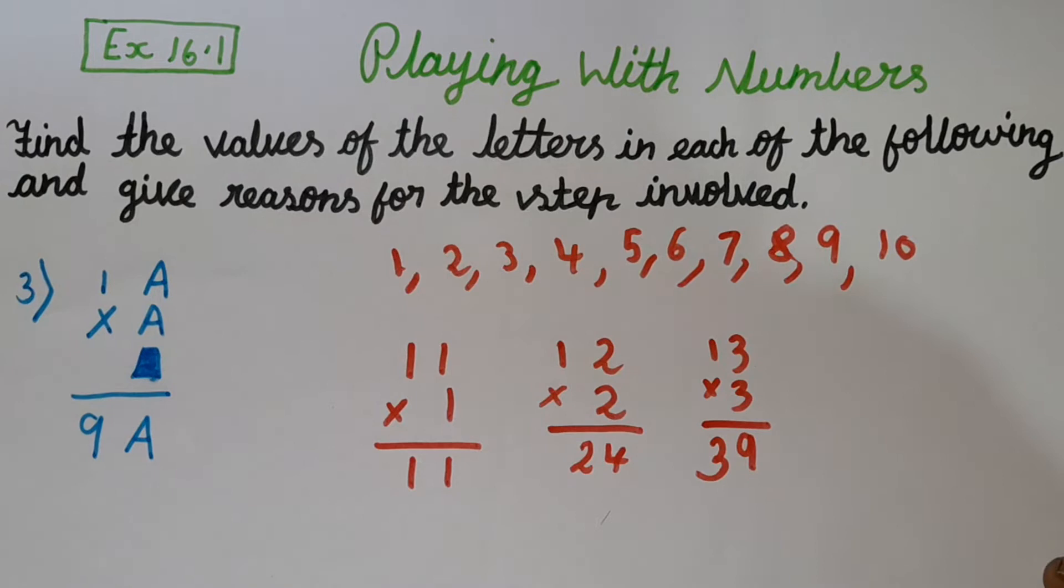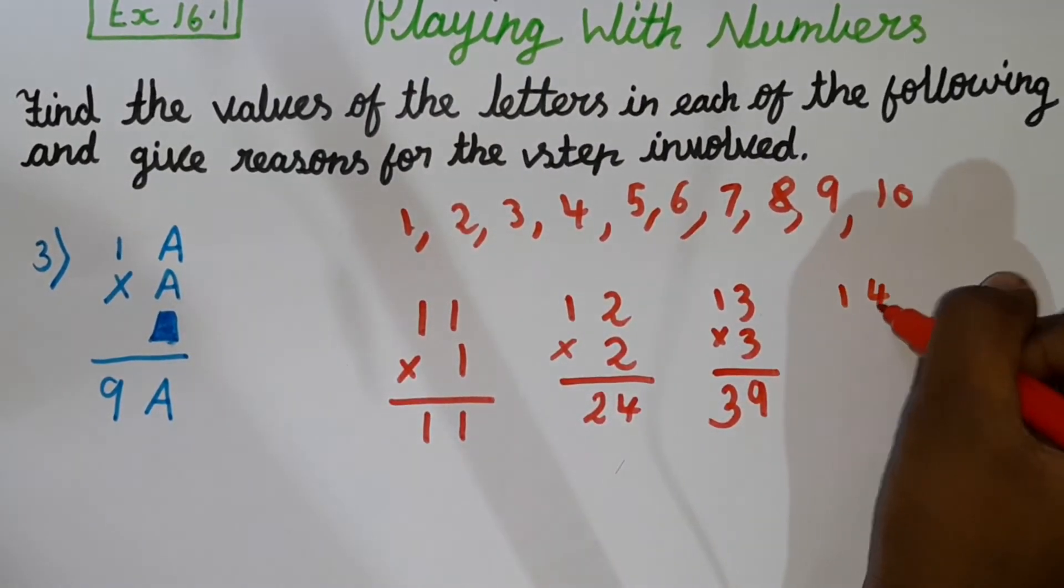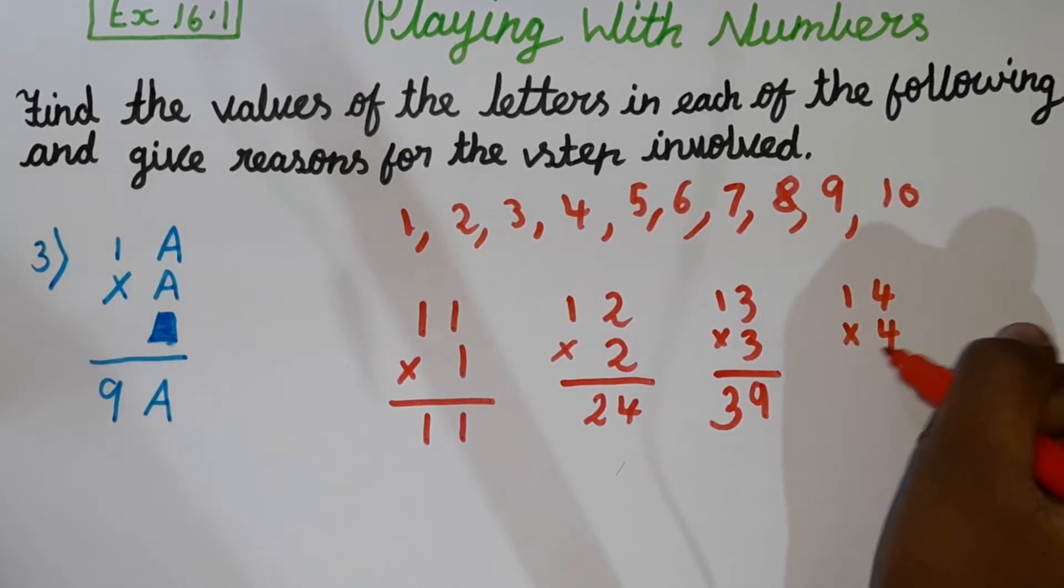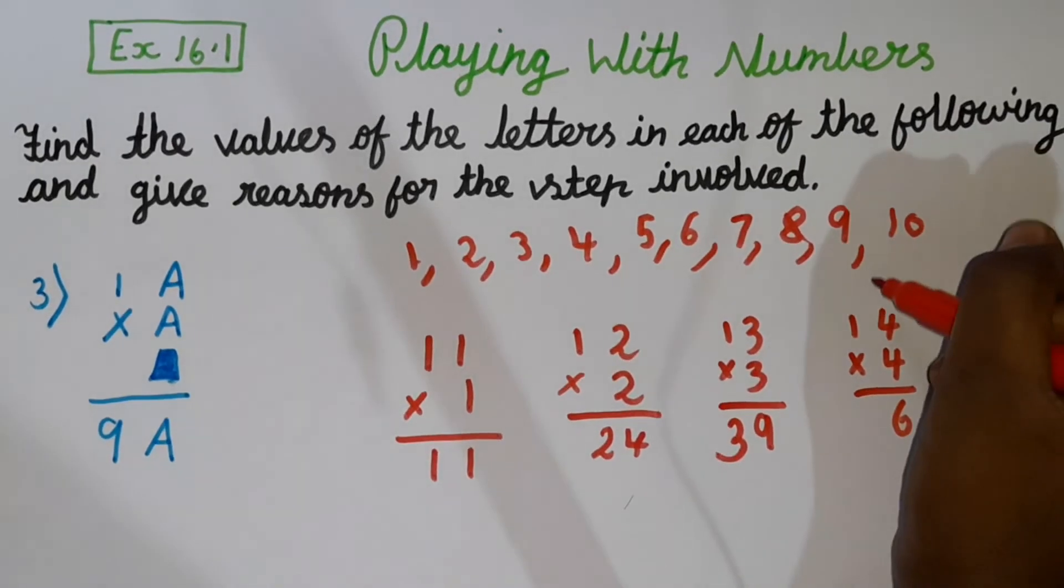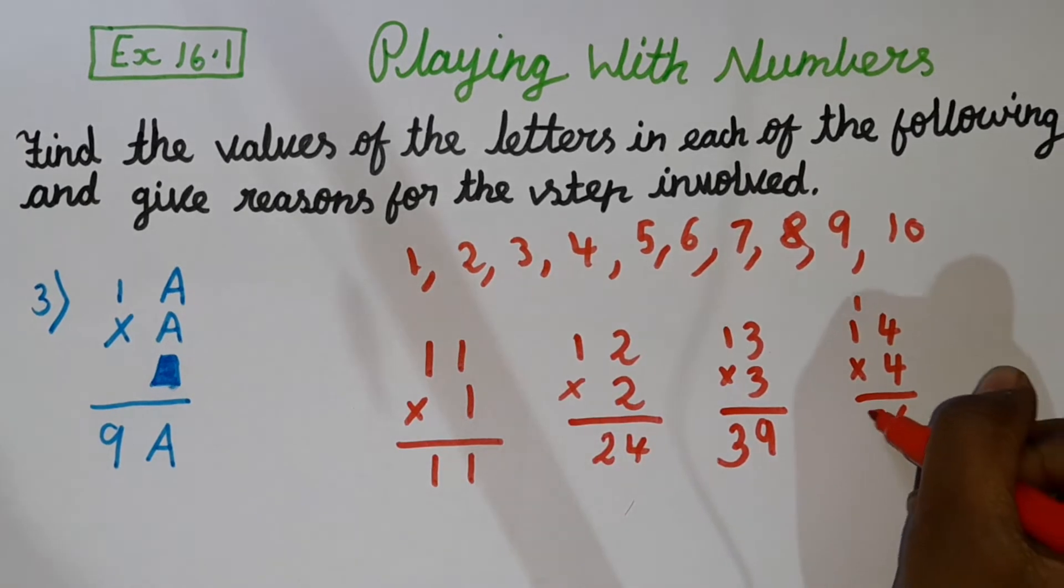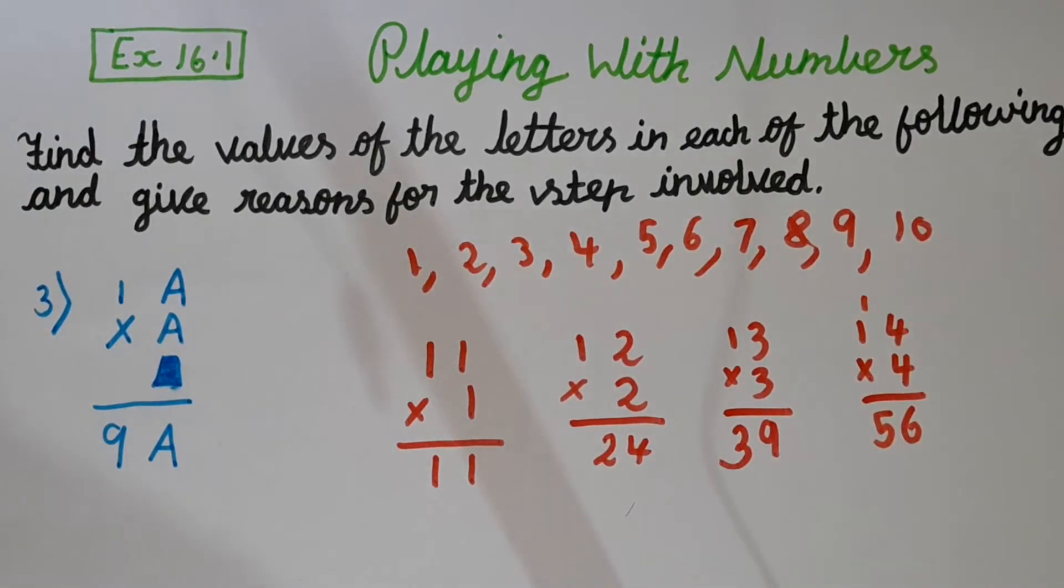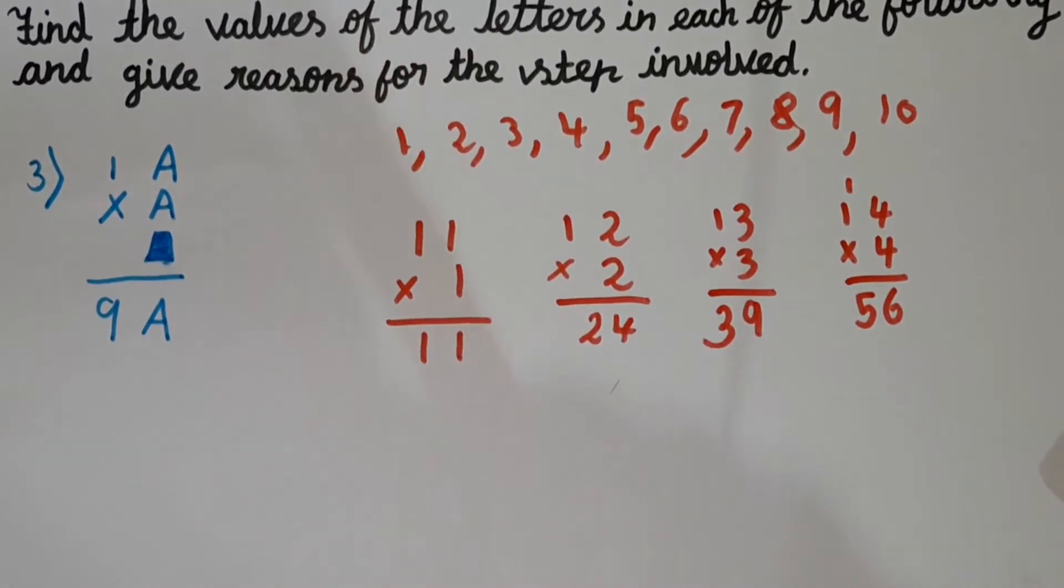Now let's try with 4. So 1, 14 into 4. Let's see. 4 fours are 16, 6 here, 1 carry. 4 ones are 4, and plus 1, 5. So our answer is 56, which is not possible because here we should get the answer 4.